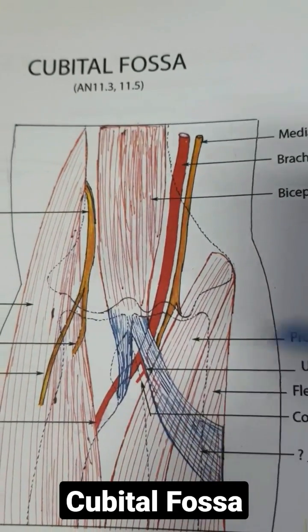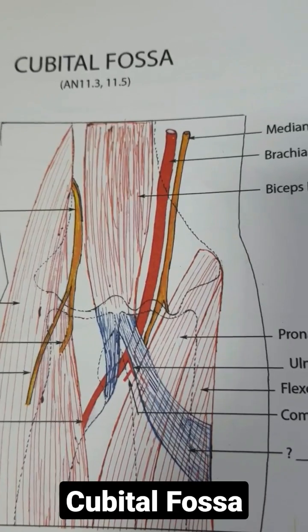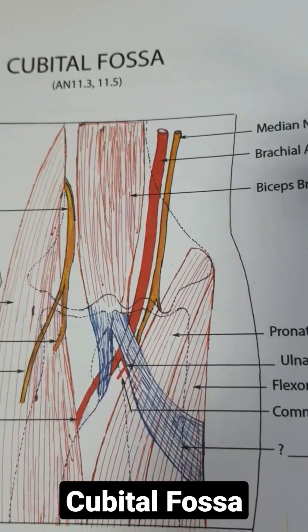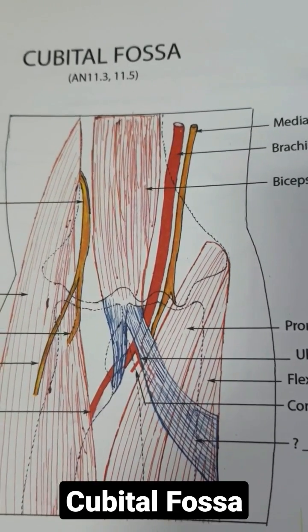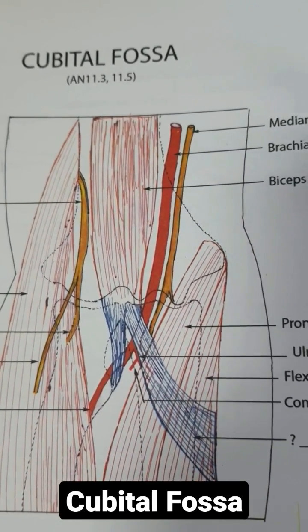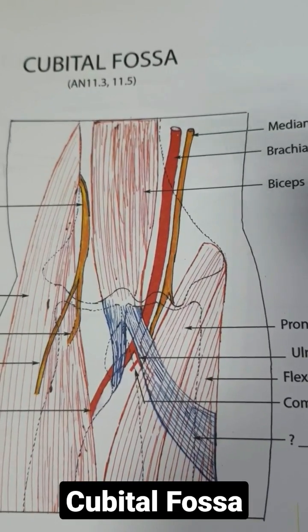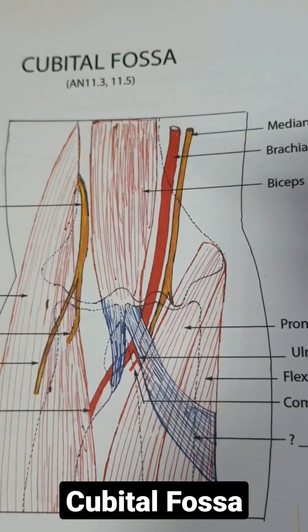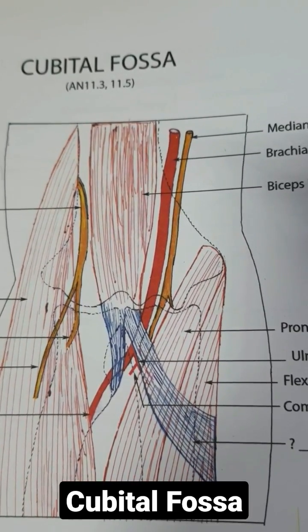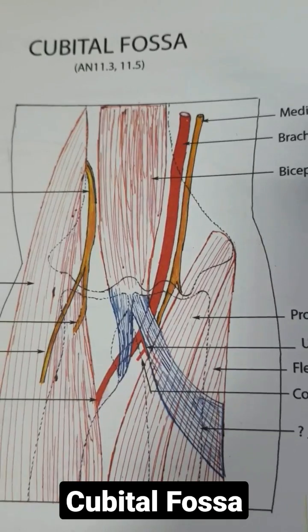Now we will talk about the roof. The roof is formed by the skin, superficial fascia, the median cubital vein running toward the medial side, the medial cutaneous nerve of the forearm, and the lateral cutaneous nerve of the forearm.